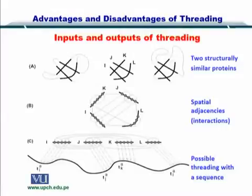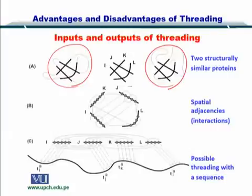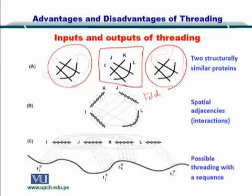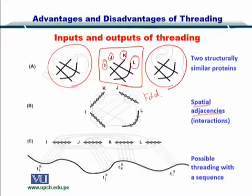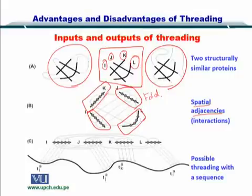Looking at the inputs and outputs of threading, you will see that we have two structurally similar proteins. In both of them, we have a fold that is common, and this contains i, j, k, and l secondary structures. We also measure their spatial adjacencies — that is, how close i is to j, and l is to k, and so on. These spatial adjacencies describe the interactions between these secondary structures.